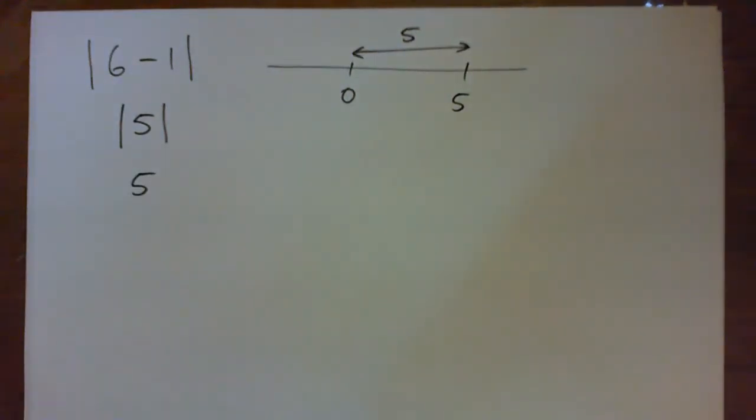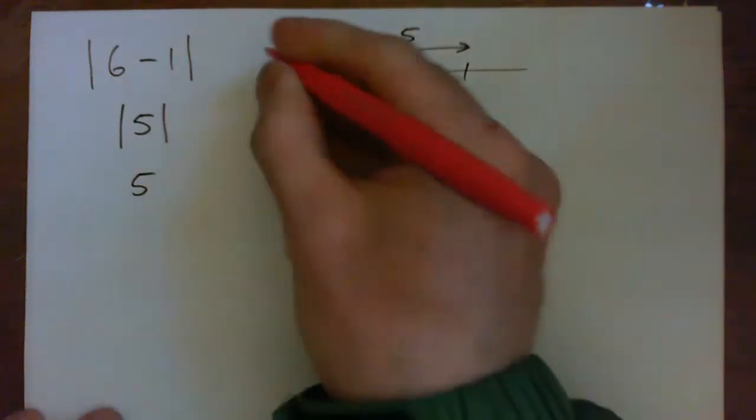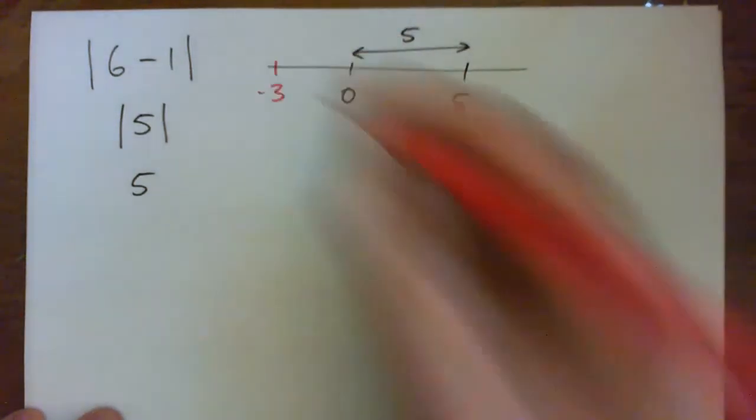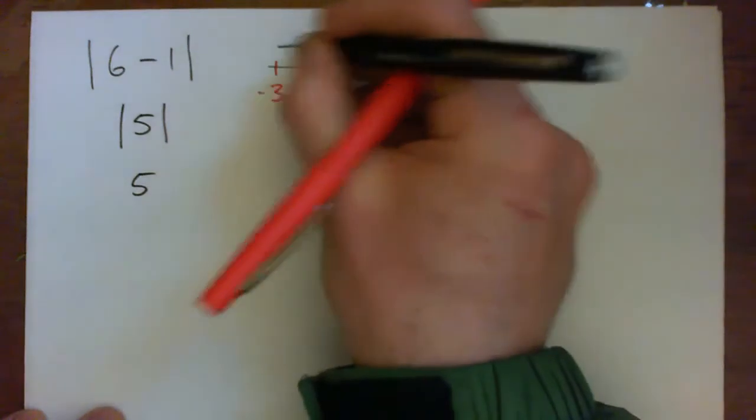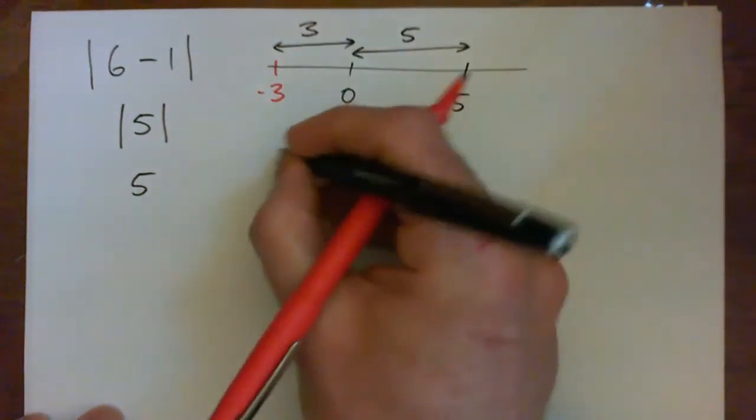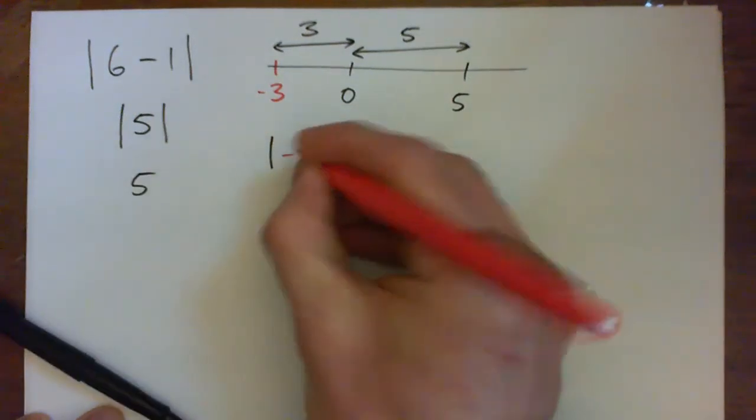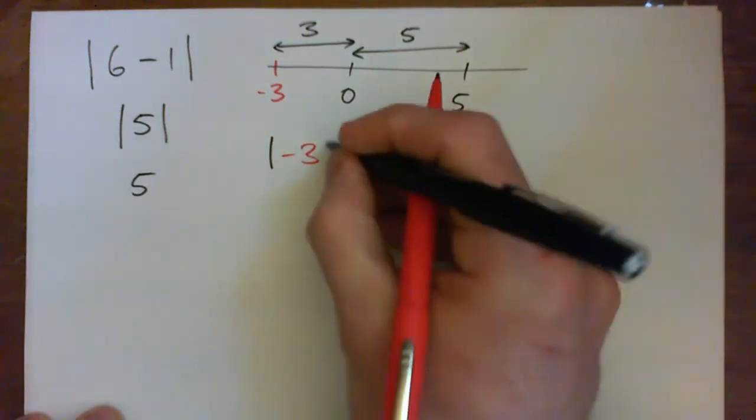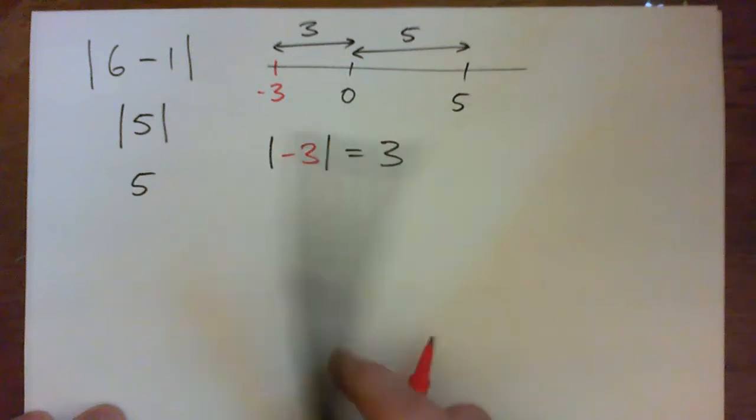Similarly, if you think about negative numbers, let's take negative 3. The distance between negative 3 and 0 is 3 spaces, it's 3 spaces away. So the absolute value of a negative number like negative 3 is also just positive 3.